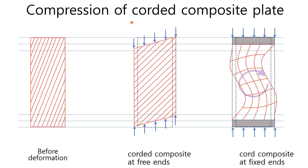How about the compression of a corded composite plate? Compressing that plate shows similar behavior to extending. The composite rectangular plate with steel cords at angle will deform to a parallelogram shape with simply supported ends. It shows skewed deformation but has the same lateral dimension all the way along the x-axis and y-axis. On the other hand, the lateral deformation will show a curved shape along the longitudinal x-axis with clamped ends.